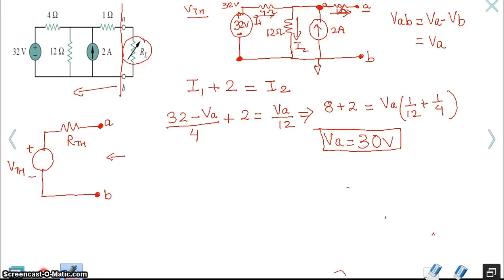We just said earlier, when we started out, that VA, this voltage VA, since it's looking at the open terminal voltage, VA is equal to Vth. So Vth is equal to 30 volts.